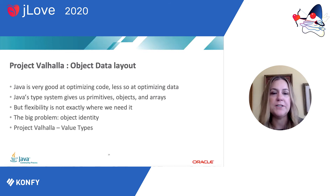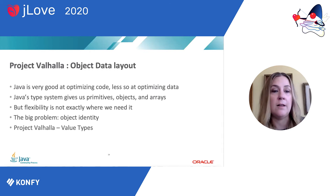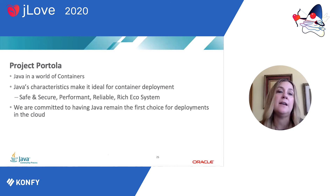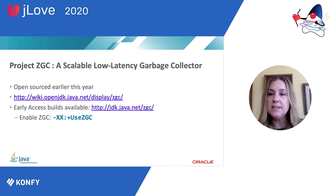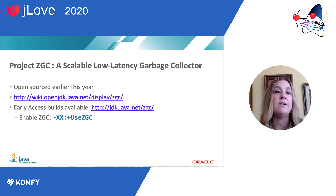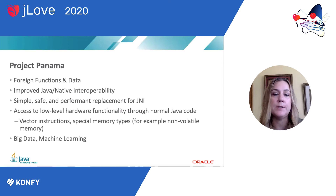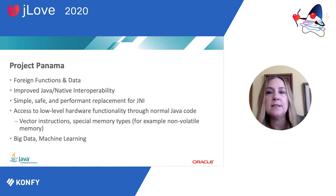Project Valhalla is looking at value types and object data layout — particularly exciting for developers, with some things getting close to coming out. Project Portola addresses Java in a world of containers, which is important for keeping Java the first choice for cloud deployments. Project ZGC is a scalable low-latency garbage collector with many things already integrated into releases through Java 15. Project Panama looks at specific use cases around big data and machine learning, with a simple, safe replacement for JNI to help Java operate in an improved way natively.